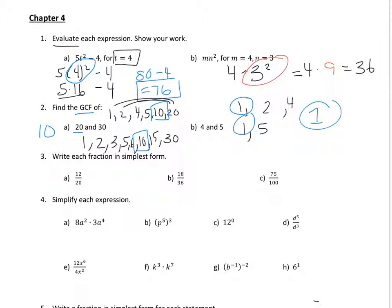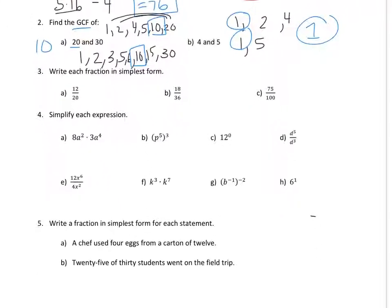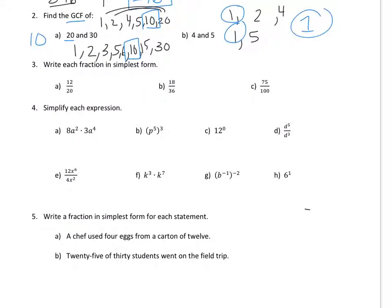Okay, number 3. Write each fraction in simplest form. It means to reduce it. So find the highest number that goes into 12 and 20. So I can divide both of them by 4. So if I divide the top by 4, I get 3. If I divide the bottom by 4, I get 5. So 3 fifths.